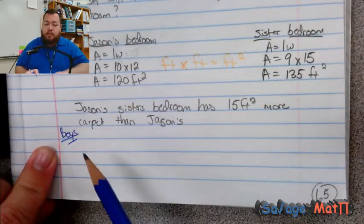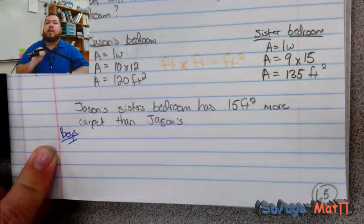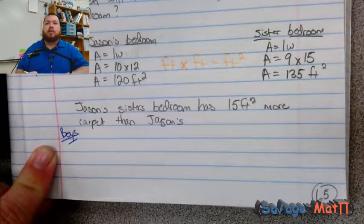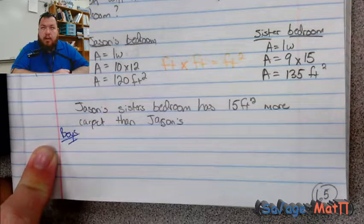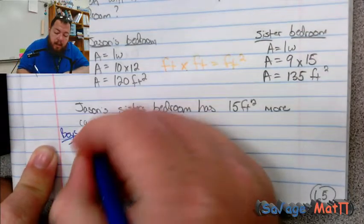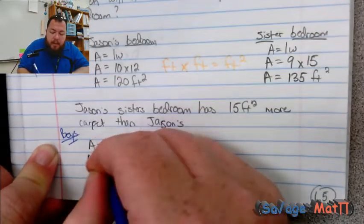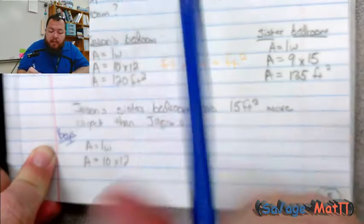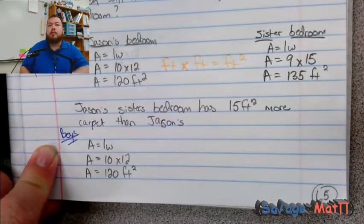The boys' question: if carpet costs four dollars per square foot, how much will it cost to carpet Jason's bedroom? The hidden question is we still have to find the area first. Area equals length times width, so area equals 10 times 12 — because Jason's bedroom is 10 feet by 12 feet — which gives us area equals 120 feet squared.